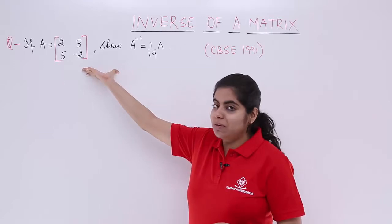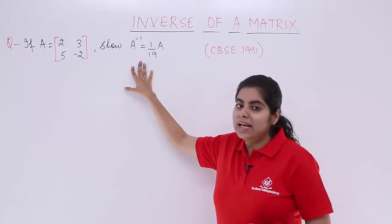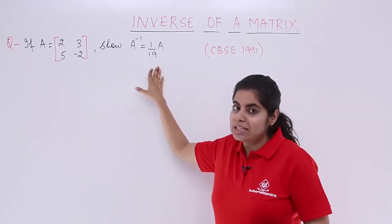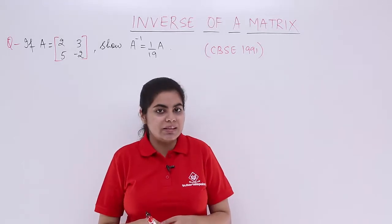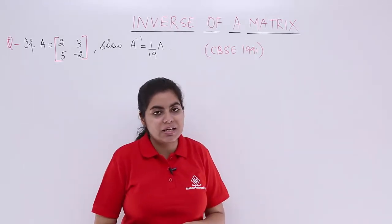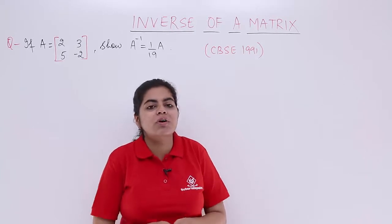The question is if A is a given matrix, you have to show that A inverse is equal to 1 by 19 A. You can see that this question has been asked in the CBSE exam of 1991 for class 12.